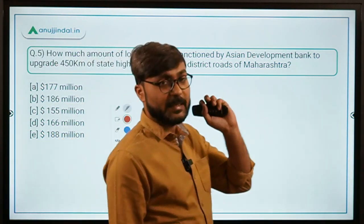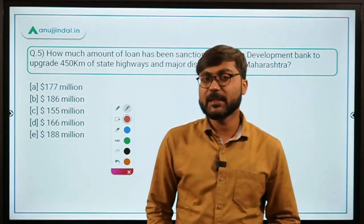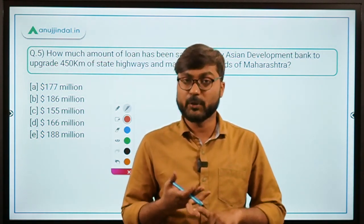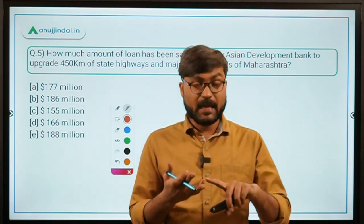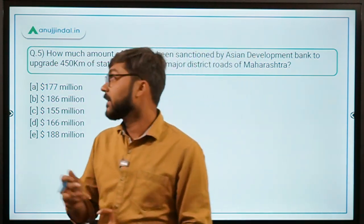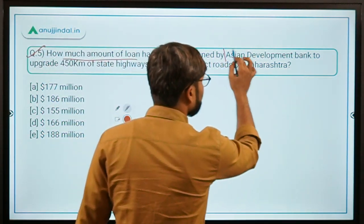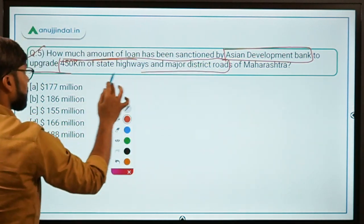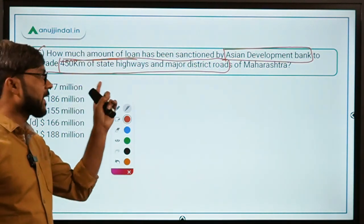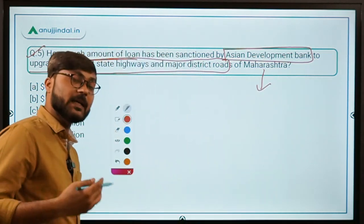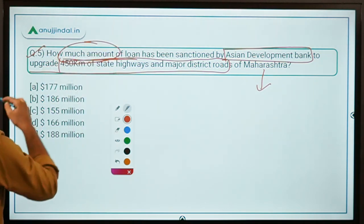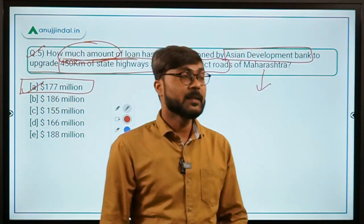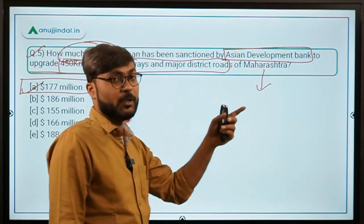Question number five can be asked as a one-marker. For loan-based questions, remember four things: who gave the loan, to whom it was given, what the purpose is, and what the amount is. Here, the Asian Development Bank has given a loan of 177 million dollars to Maharashtra to upgrade 450 kilometers of state highways and major district roads. The correct answer is option A — 177 million dollars.